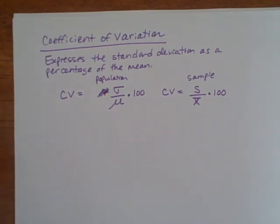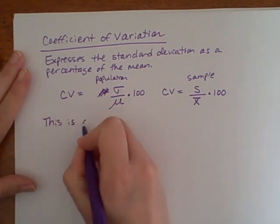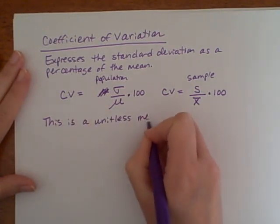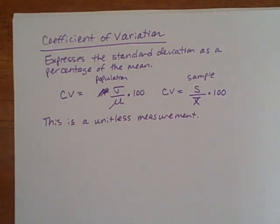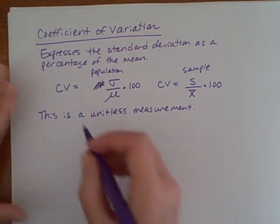The advantage to the coefficient of variation is that this is a unitless measure. There are no units except for percent attached to coefficient of variation, so we can use it to compare the spread of sets of data that maybe were not measured in the same set of units.